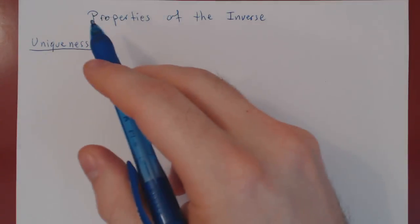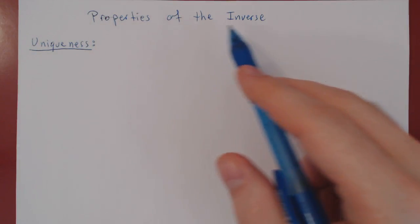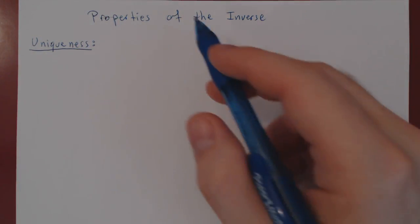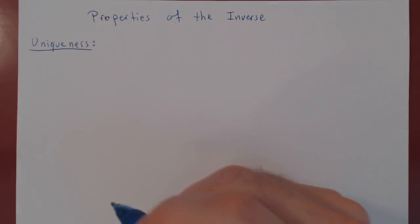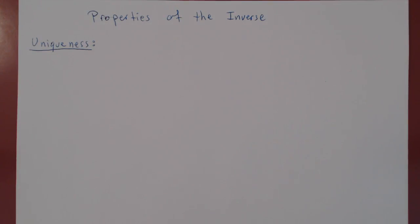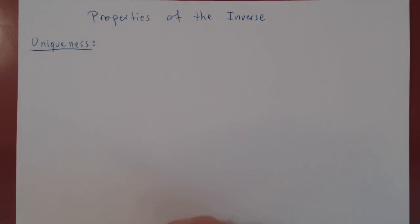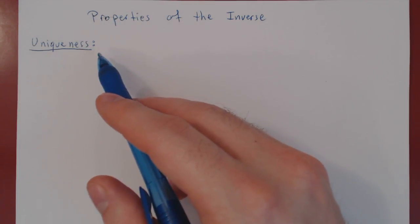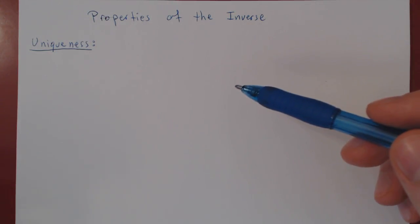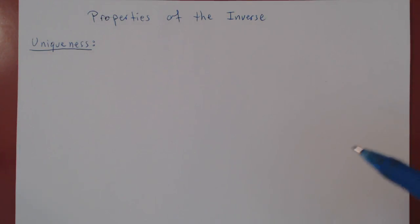In this video, we will prove and look at properties of the inverse. The first property implies uniqueness of the inverse: if an inverse of A exists, it is actually unique. That's why we can say 'the inverse of A.' How do you prove uniqueness? Assume that there are two such objects and prove that they have to be the same — that proves uniqueness.